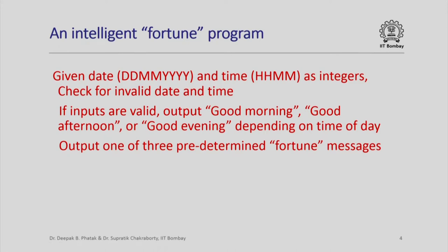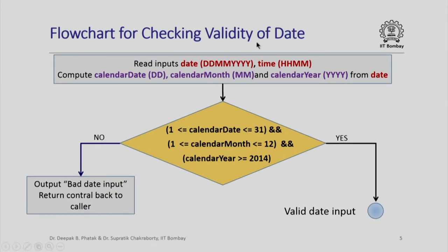Here is a simple flowchart for checking the validity of date. We read the inputs — date in date-month-year format and time in hour-minute format — and from the date we compute the calendar date part (the two-digit date), the calendar month part (the two-digit month), and the calendar year (the four-digit year component). We then check if the calendar date lies between 1 and 31, the calendar month between 1 and 12, and the calendar year is greater than or equal to 2014. Notice the use of the double ampersand operator, which is the logical AND operation in C++.